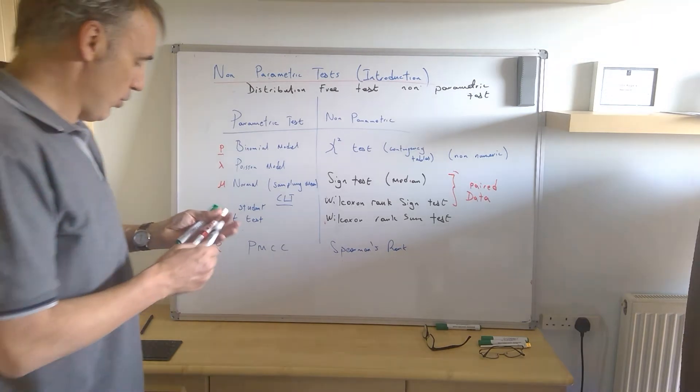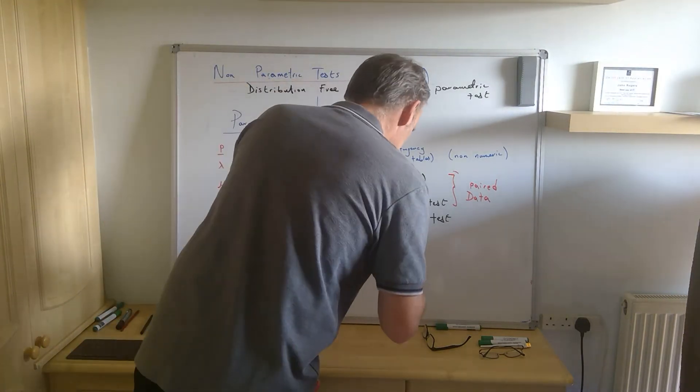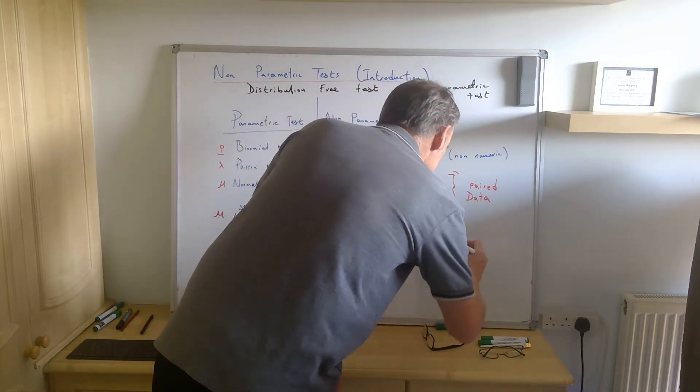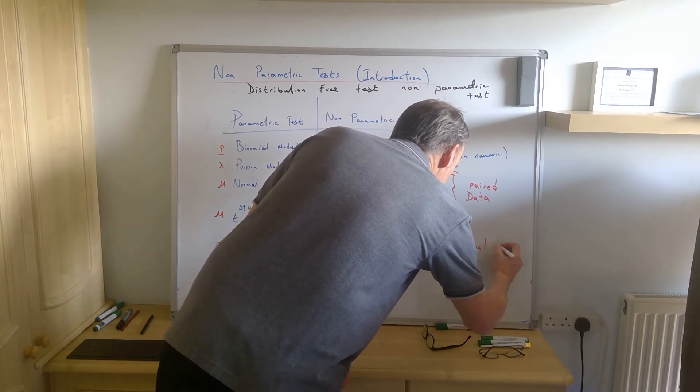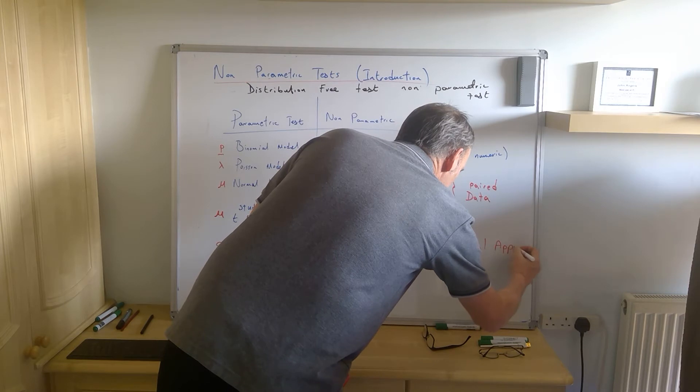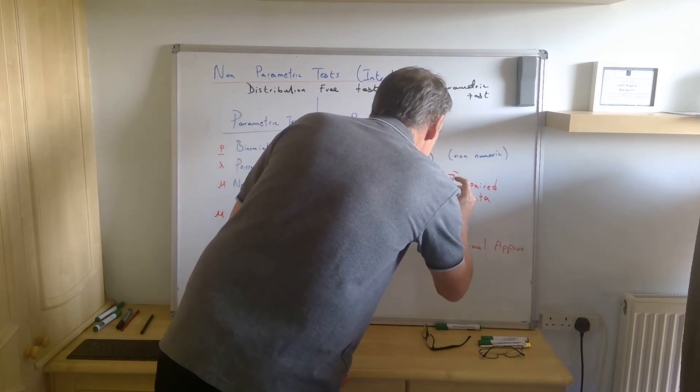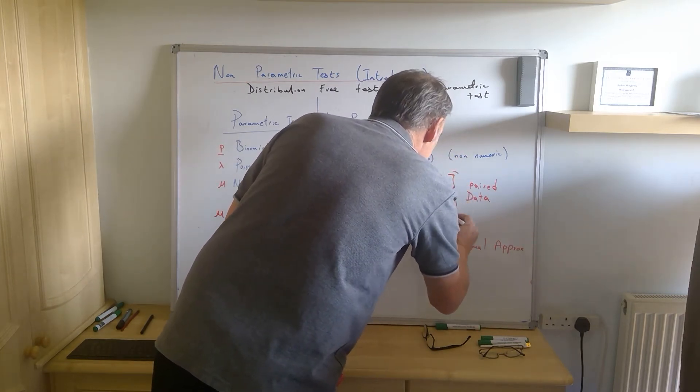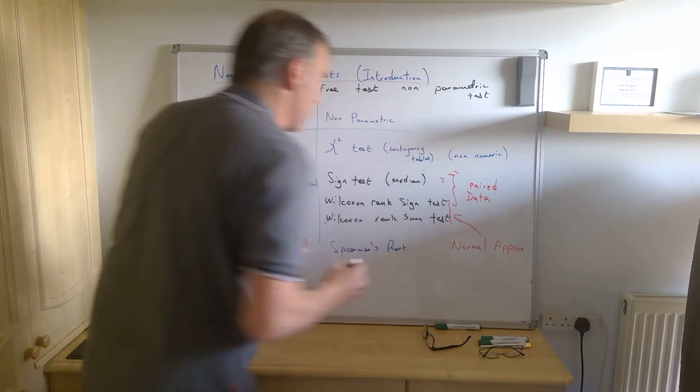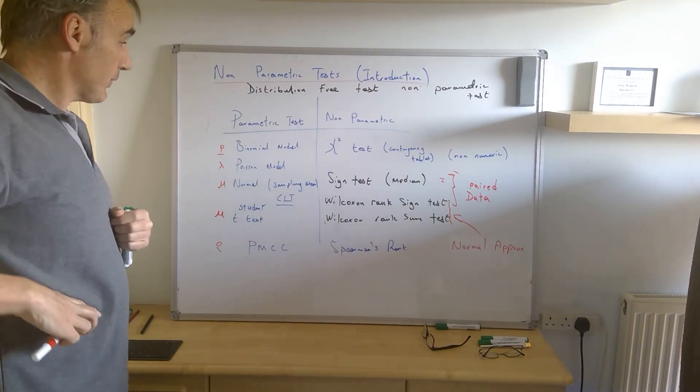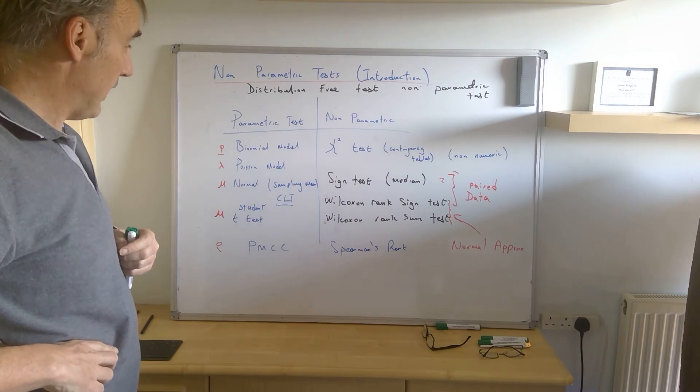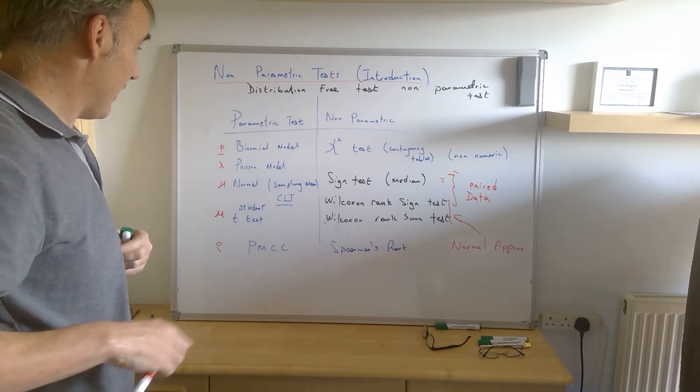And then we're going to talk about some normal approximations as well. So quite a lot to cover, really, lots of bits and pieces. We're going to talk about the normal approximation involved with these tests here, with these two tests here. We'll talk about the normal approximation to those and I'll finish it all off at the end. So we'll have done by then. So nearly done.